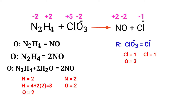Add H⁺ ions to balance the oxygen atoms. The oxygen atoms are now balanced. Next, balance the hydrogen atoms by producing H⁺ ions. Now the number of atoms are fully balanced in the oxidation half reaction.